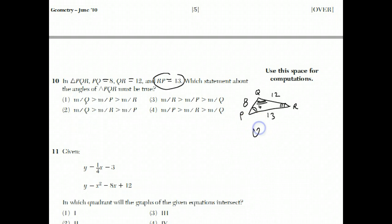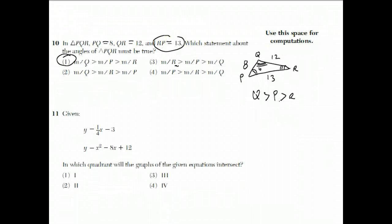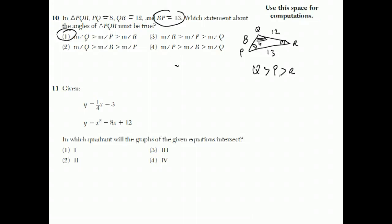And so Q is the biggest angle. P is next. And then R, Q is bigger than P, is bigger than R, which is choice 1. Again, I advise you to pause to do the question before you look at how I did it.